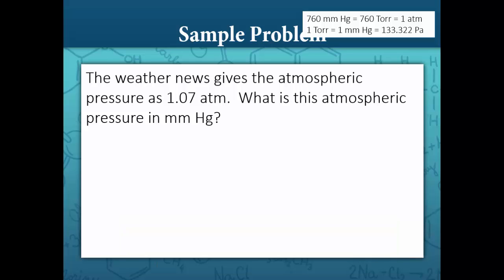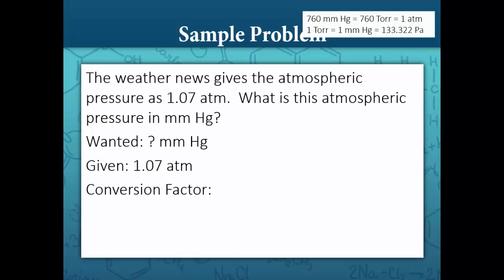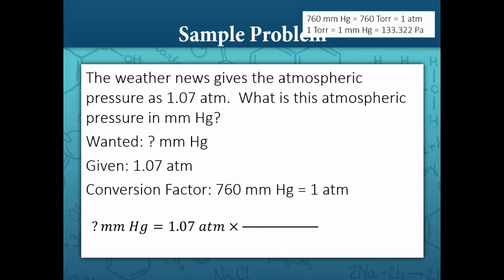Let's do some conversion sample problems. The weather news gives the atmospheric pressure as 1.07 atmospheres. What is this atmospheric pressure in millimeters mercury? We find the conversion factor: 760 millimeters mercury equals 1 atmosphere. Setting up our problem, question mark millimeters mercury equals 1.07 atmospheres. We put 1 atmosphere in the denominator and 760 millimeters mercury in the numerator, and we get 813 millimeters mercury.